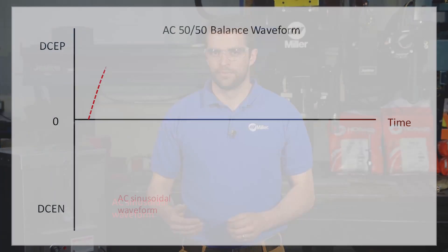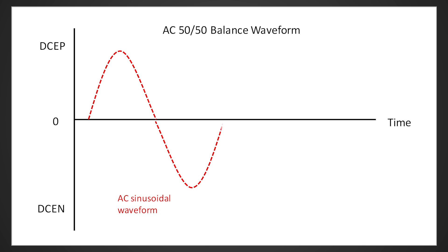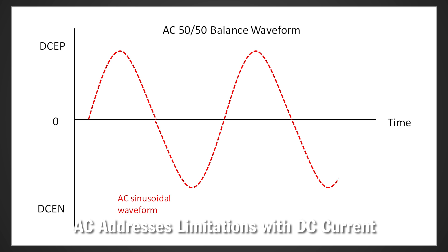In some applications, this deep penetration may be too much, for example in a root pass or on thinner material. And when higher depositions are desired, it may be difficult to maintain a low heat input. AC is a great option to consider for addressing these limitations of DC current.